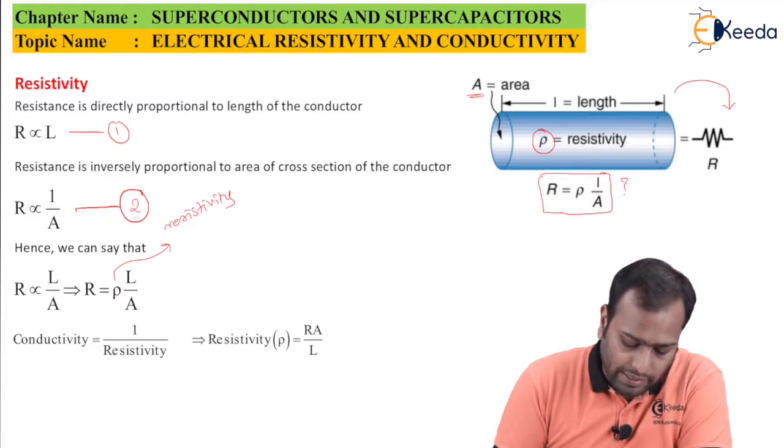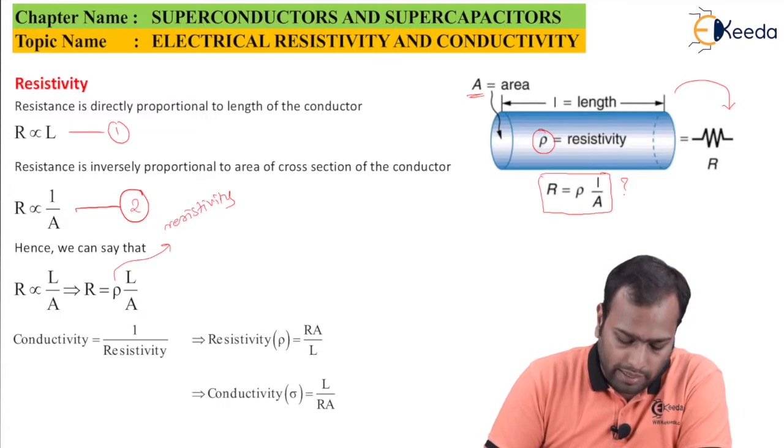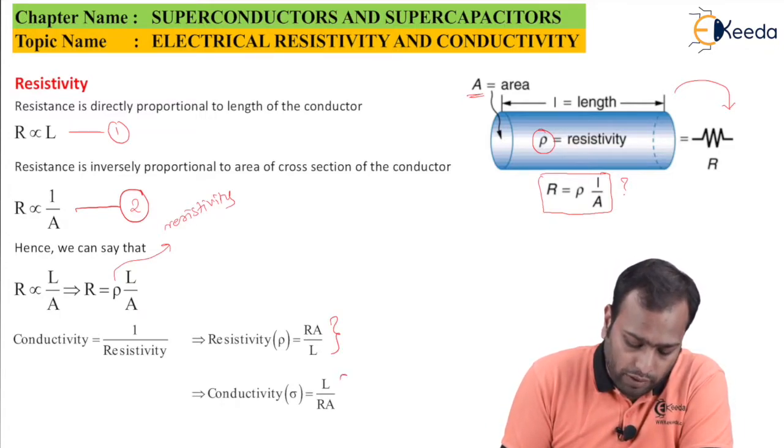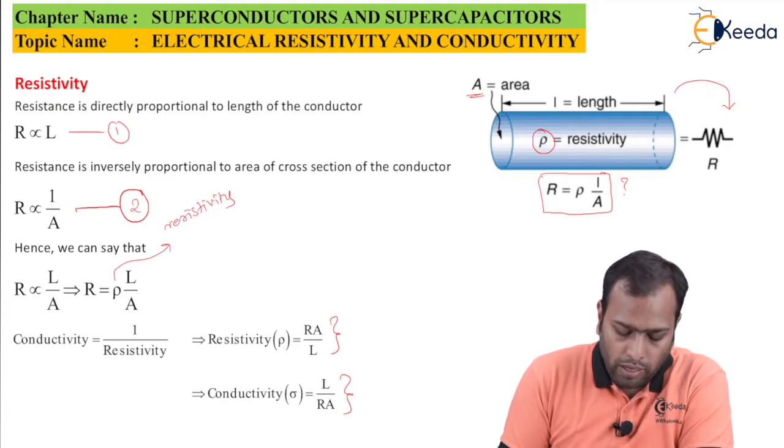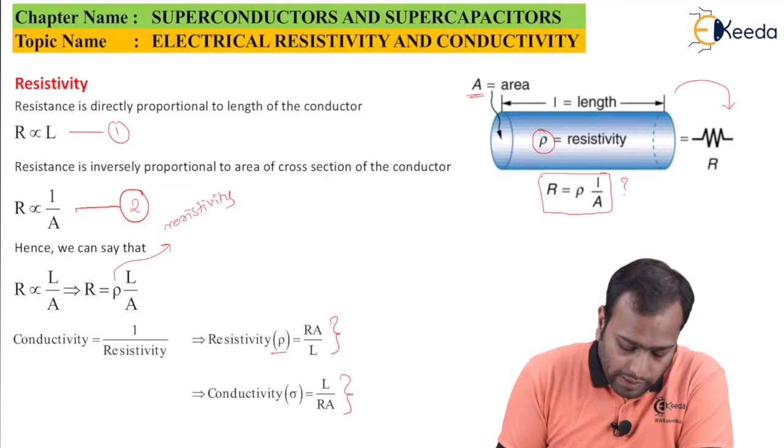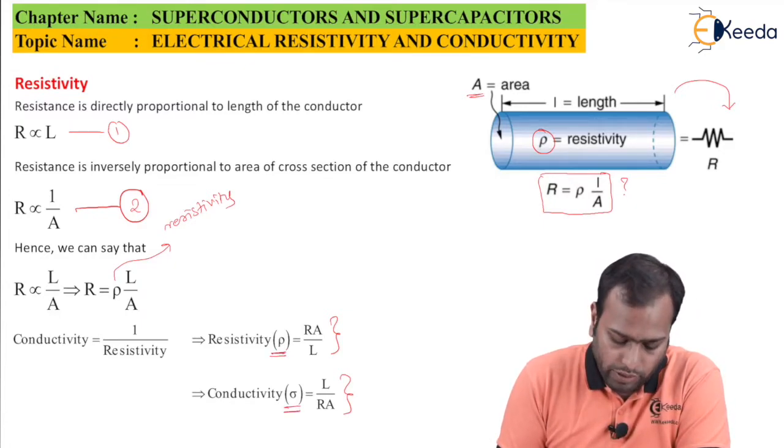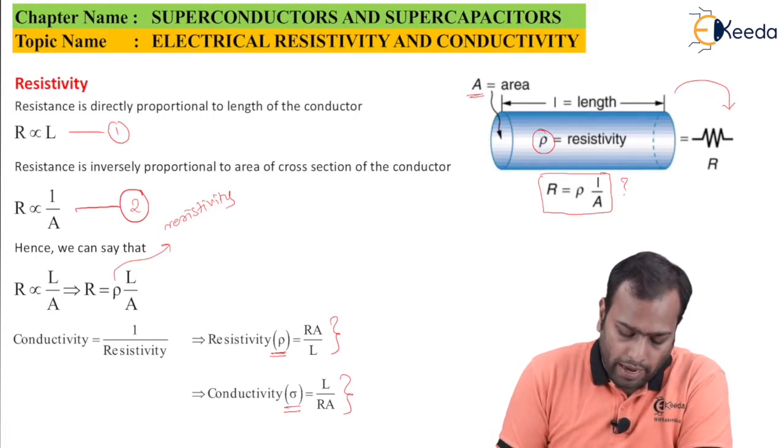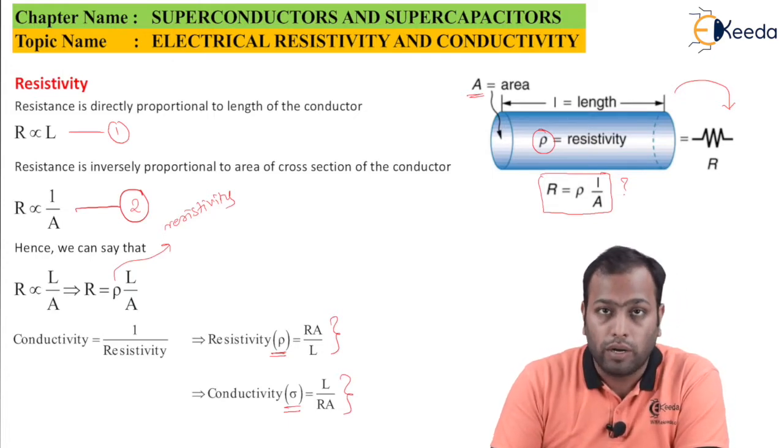We can say that if my resistivity rho is R into A by L, my conductivity is going to be L upon RA. This is for resistivity, this is for conductivity. For resistivity I use a symbol rho, and for conductivity I use a symbol sigma, and rho into sigma is always equal to 1.